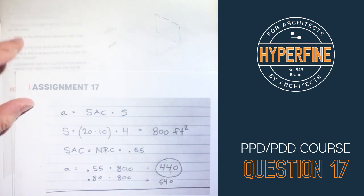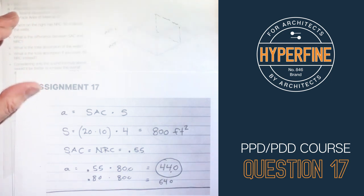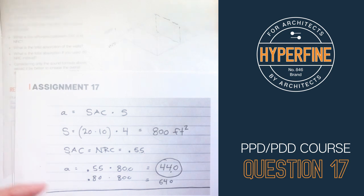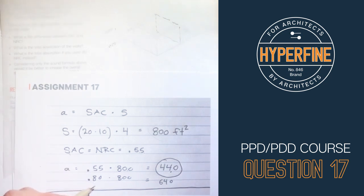The next part asks: what if the total absorption used was NRC = 0.8 instead? We simply replace 0.55 with 0.8: 0.8 × 800 = 640 sabins.